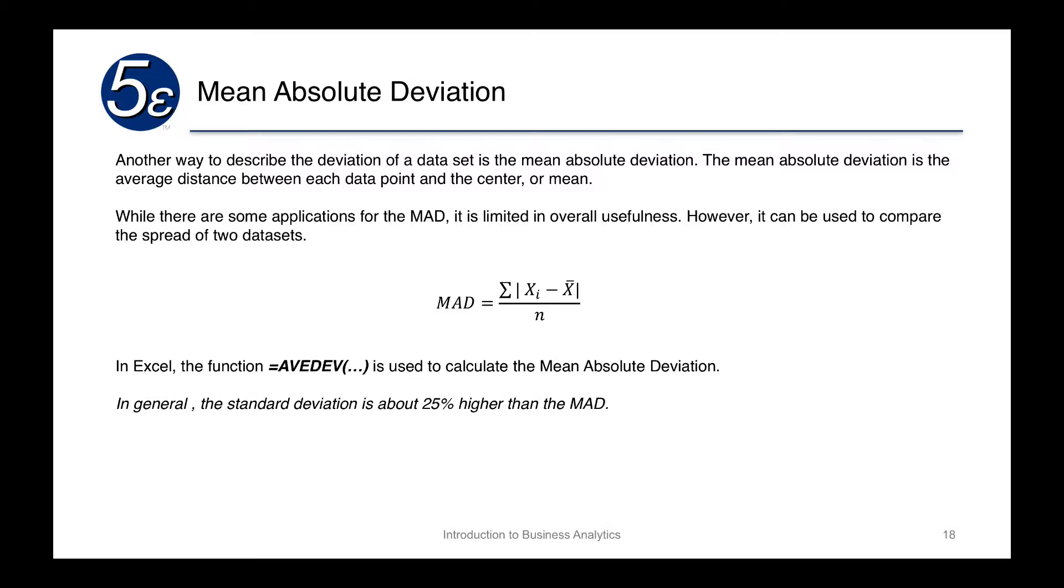So we basically take the absolute value of the difference between each individual observation and x bar, which is the sample mean. We add them all together and we divide by n.